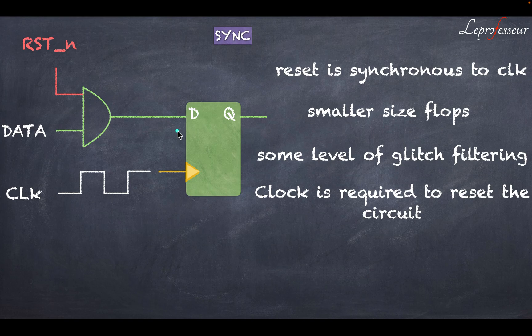Now the condition here is that the clock must be present, and then the pulse of this reset signal should be wide enough to be captured in one clock cycle. So if your reset pulse is short, it will not be captured. Your flop will not get into the reset state.